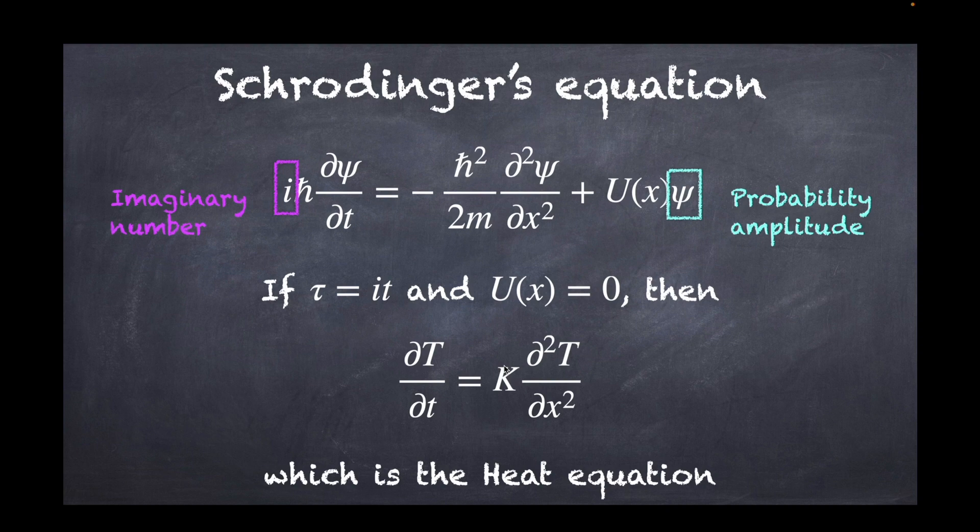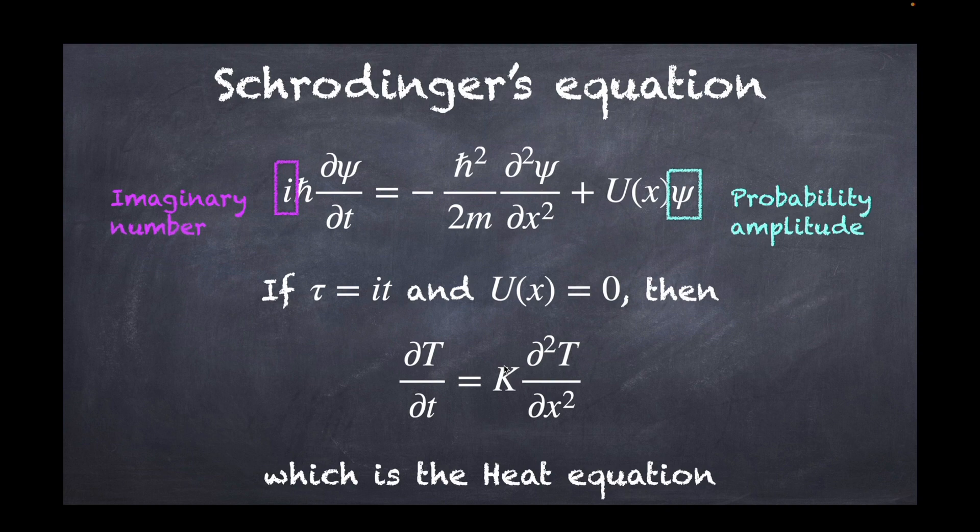But there are quite many differences between them which are quite substantial. The first one is obviously that there is an i here, there is an actual imaginary number in front of the time derivative. So that's a huge deal. It's not the same as having nothing at all here, and I think that should be quite obvious that this is going to make a difference, at least.